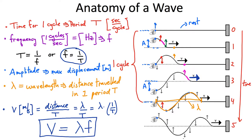Those are the main components of a wave on a string, and almost all of these terms are going to be used when describing other waves. We're going to use speed, wavelength, amplitude, period, and frequency when talking about sound waves, and we can also apply this same language when talking about electromagnetic waves — it's the same kind of jargon.